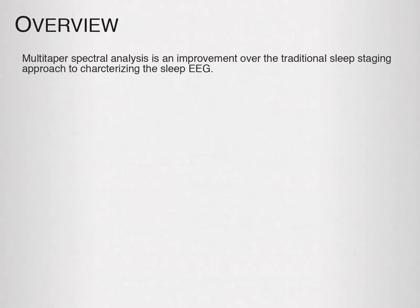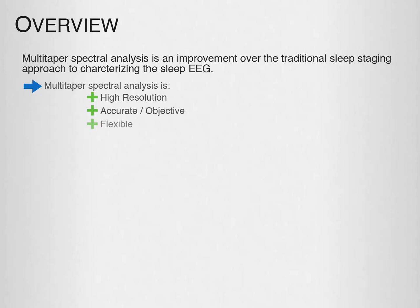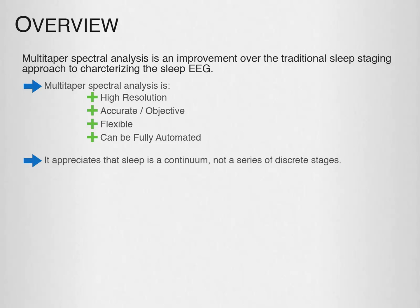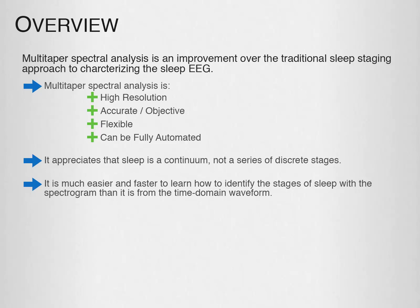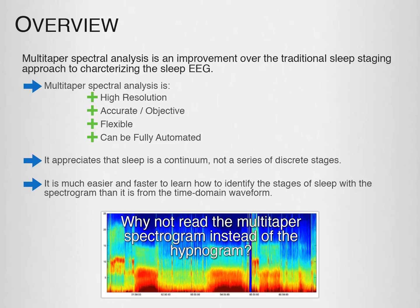In summary, multi-taper spectral analysis is an improvement over the traditional sleep staging approach to characterizing the sleep EEG. Multi-taper spectral analysis is high resolution, accurate because it is completely objective, flexible because it is data-driven, and it can be fully automated. Furthermore, it appreciates that sleep is a continuum, not a series of discrete stages. The multi-taper spectrogram contains a wealth of information on the dynamic architecture of sleep far beyond that contained in the hypnogram. It is much easier and faster to learn how to identify sleep stages with the spectrogram than from the time domain waveform. Therefore, with all these benefits, why not read the multi-taper spectrogram instead of the hypnogram?